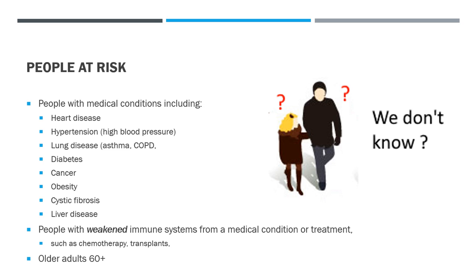People with weakened immune systems from a medical condition or treatment — such as chemotherapy or transplants, where you have to take drugs to stop the transplant from rejecting — are also at risk. Older adults, 60 years and up, typically have weakened immune systems just from their age. The problem is we don't know who is at risk. When we walk around or visit people, we don't know their medical conditions — I worked with a guy for 10 years and found out he was a diabetic when he went into shock.